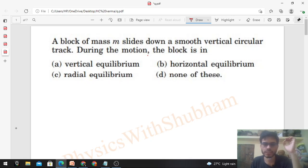So equilibrium means net force is zero. Vertical equilibrium means net force in the vertical direction is zero. If you say particle is in vertical equilibrium, what does that mean? Net force in the vertical direction should be zero. It means that acceleration of the particle in vertical direction will be zero, because force you can write as mass into acceleration.